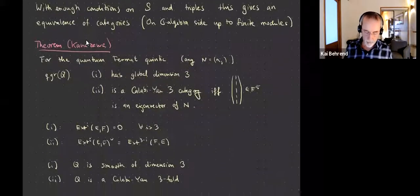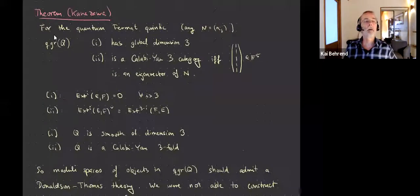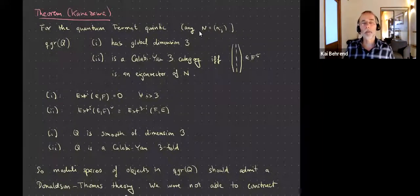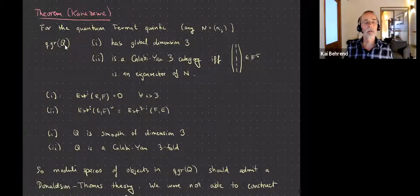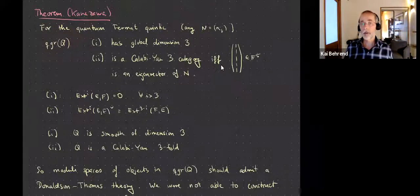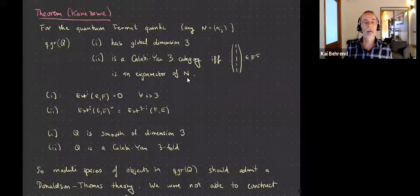First theorem, by Kanazawa: for this quantum Fermat quintic — and in fact for any matrix of commuting conditions — this abelian category Q satisfies two conditions: it has global dimension three and it is a Calabi-Yau three category, if and only if a particular vector is an eigenvector of that matrix. That's some technical condition.